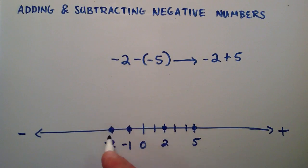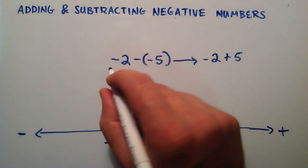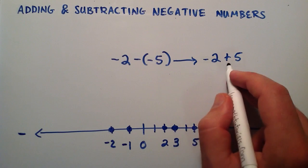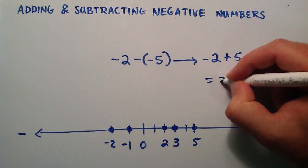So starting at negative 2, going plus 5 units, brings us back 1, 2, 3, 4, 5 to this point right here, which is the number 3. So negative 2 minus a negative 5 is the same thing as negative 2 plus 5, which equals the number 3.